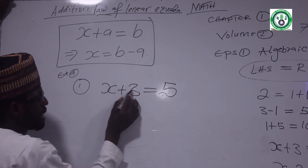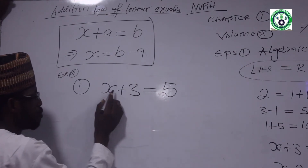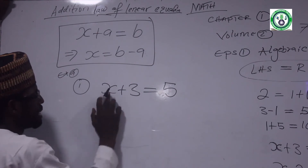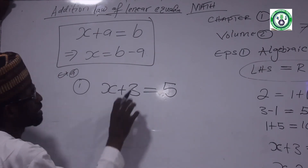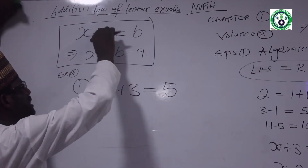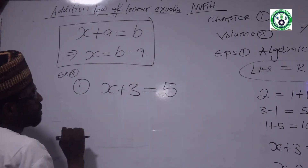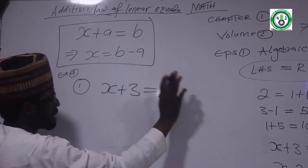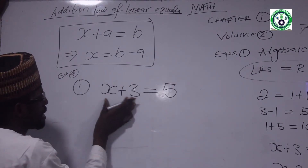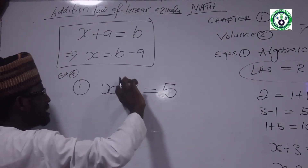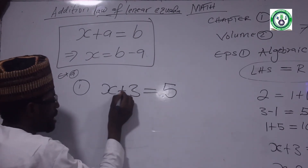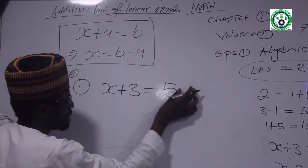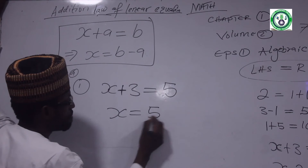The unknown number: what I add to 3 gives 5. The side that x is on also has plus 3. On the right side we have 5. We need to isolate x, so: x equal to 5 minus 3.